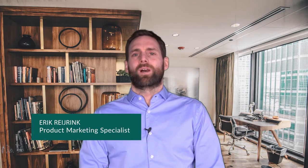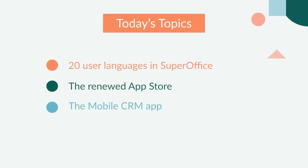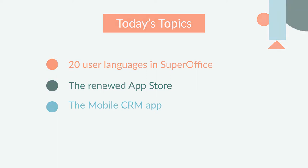Hi and welcome to the product roundup for March 2022. In today's episode we'll be talking about the 20 user languages available in SuperOffice, the all-new redesigned App Store and some of the apps available there, and we'll have a look at the SuperOffice Mobile CRM app to see what's new. Let's dive right in and start the show.